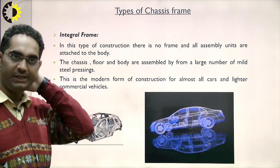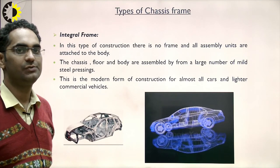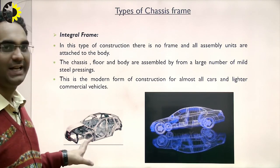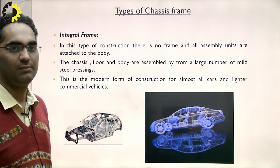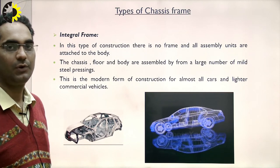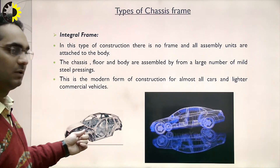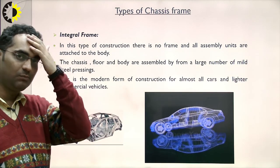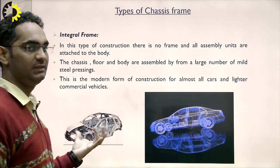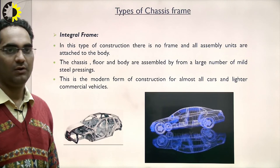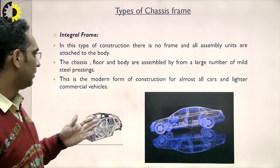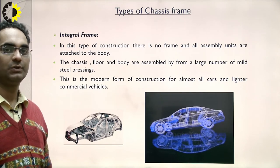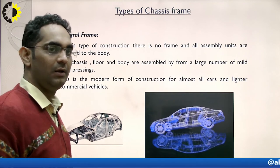In the integral frame, there is no separate frame; all assembly units are attached to it. The chassis floor and body are assembled from a large number of mild steel pressings. This is the modern form of construction for almost all cars and lighter commercial vehicles.